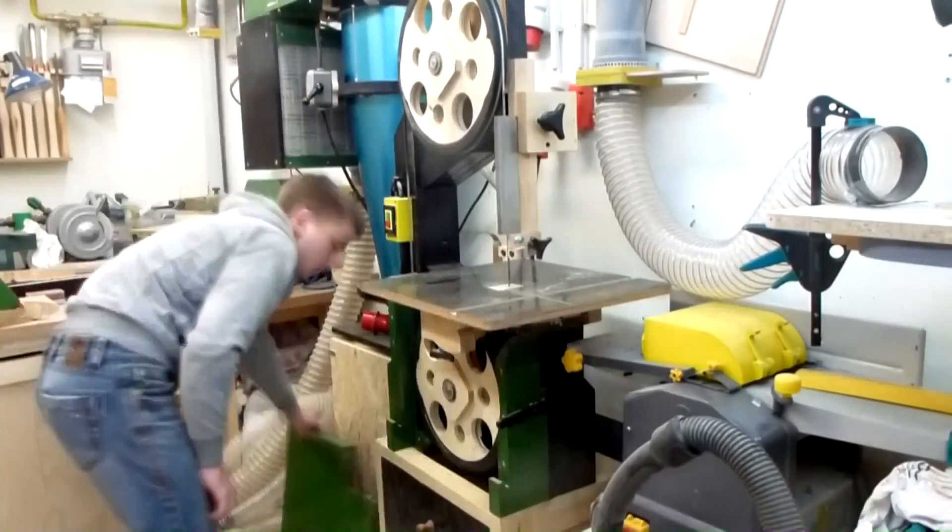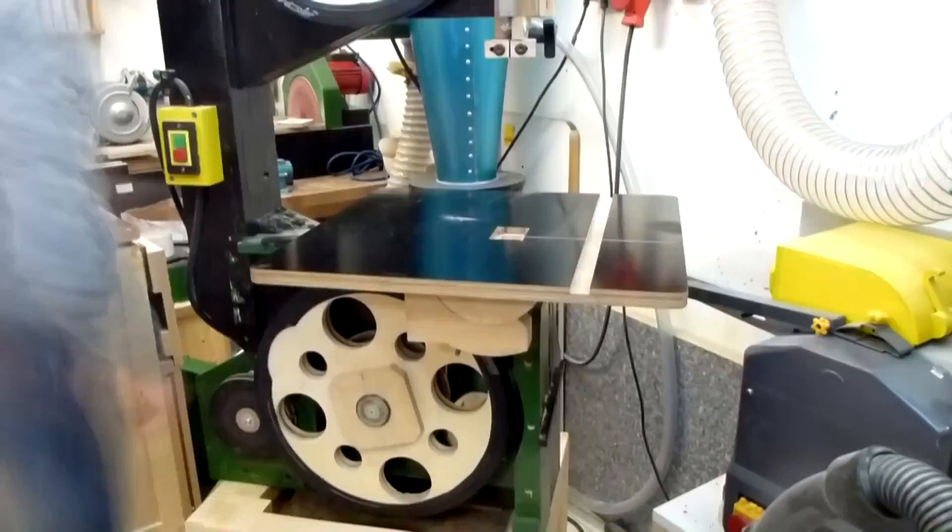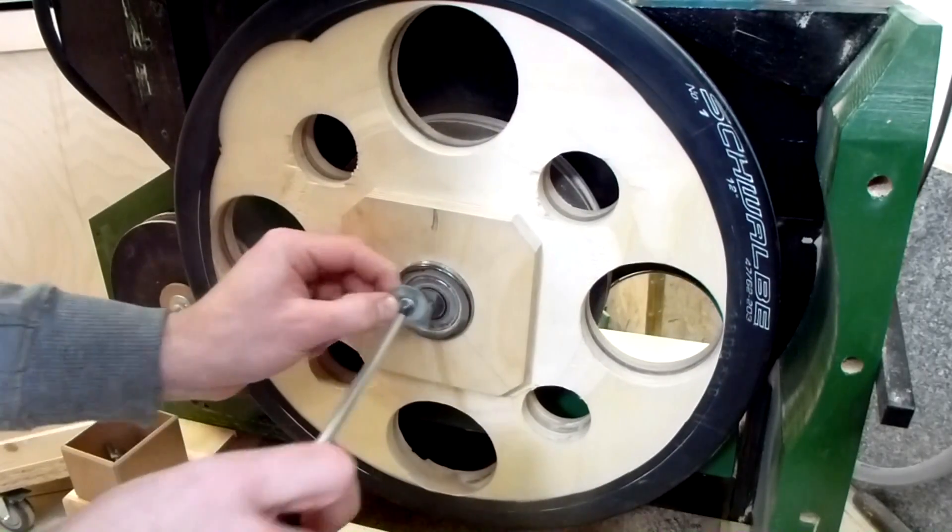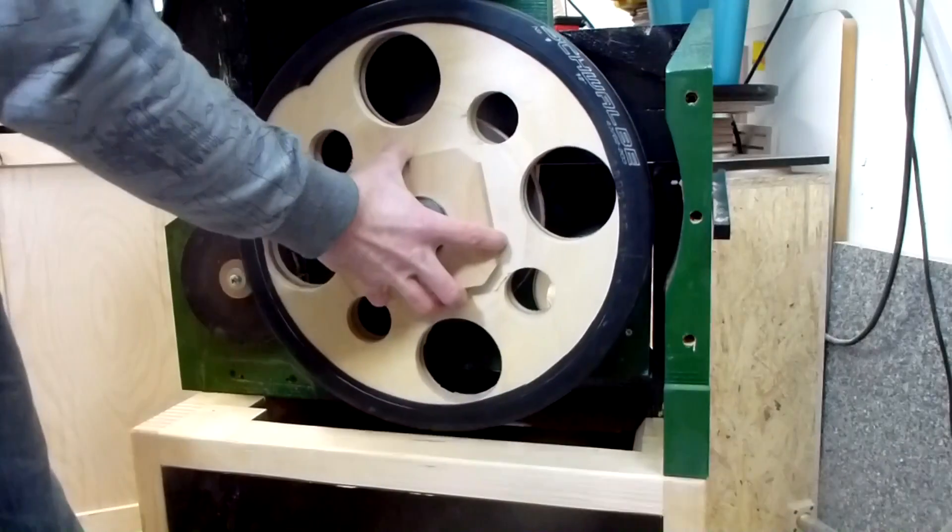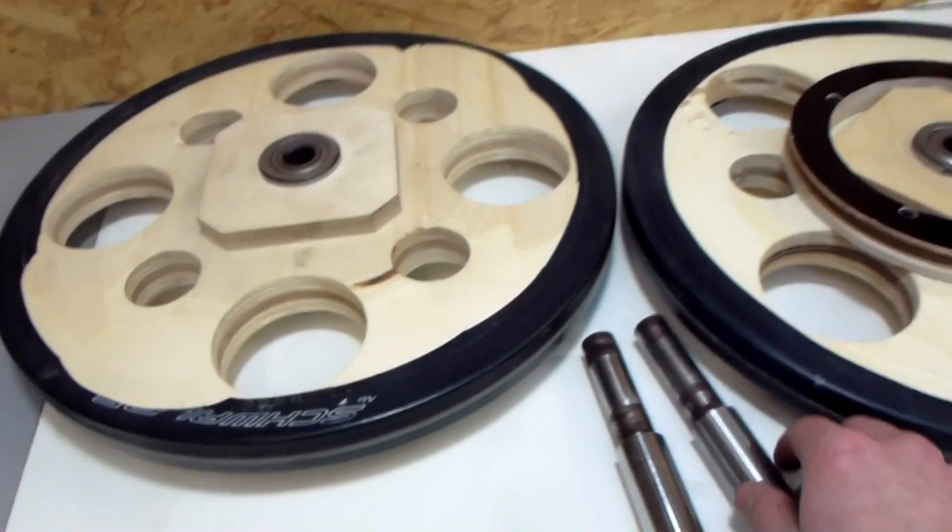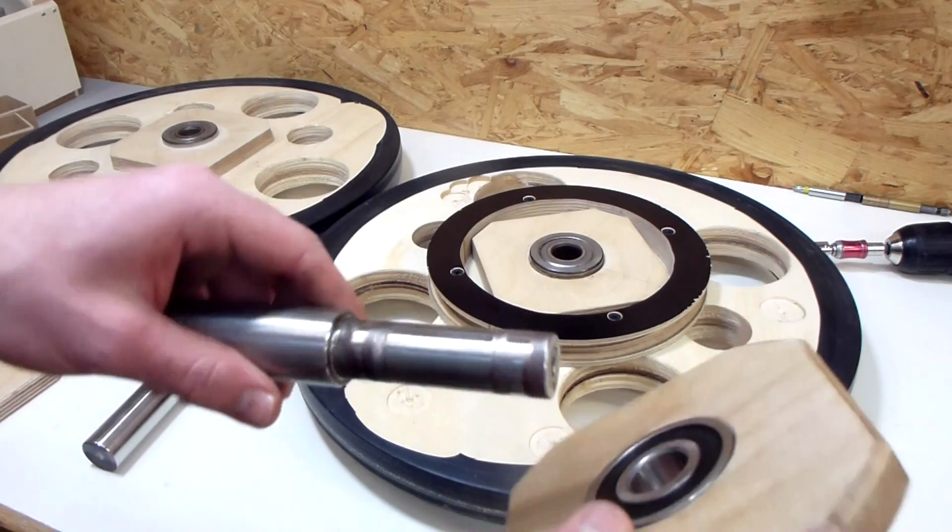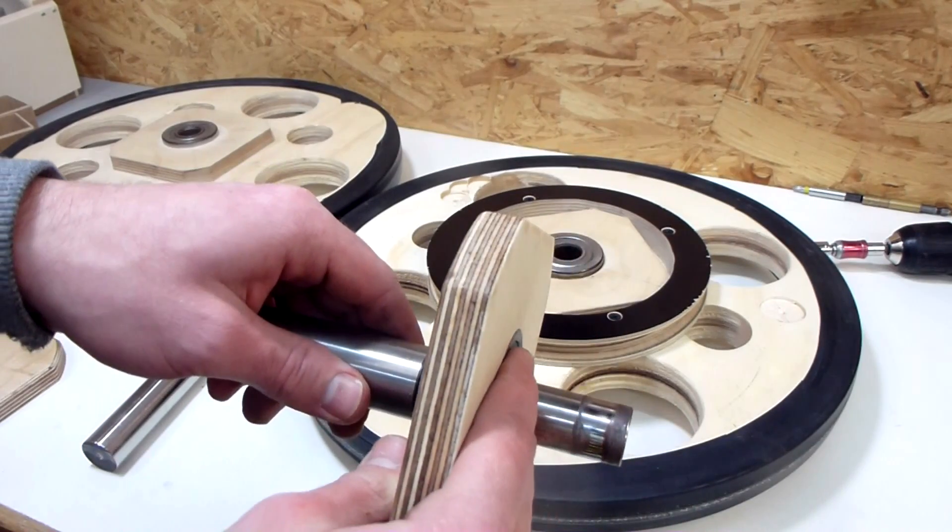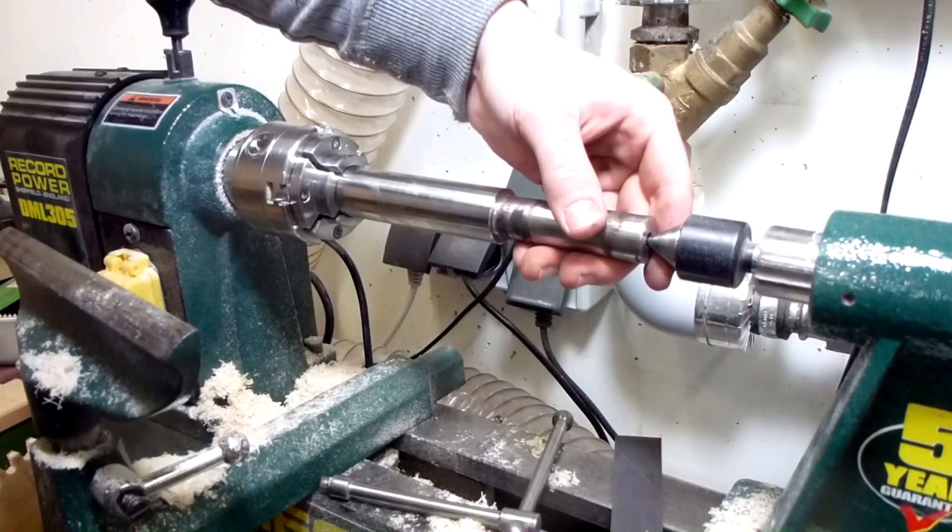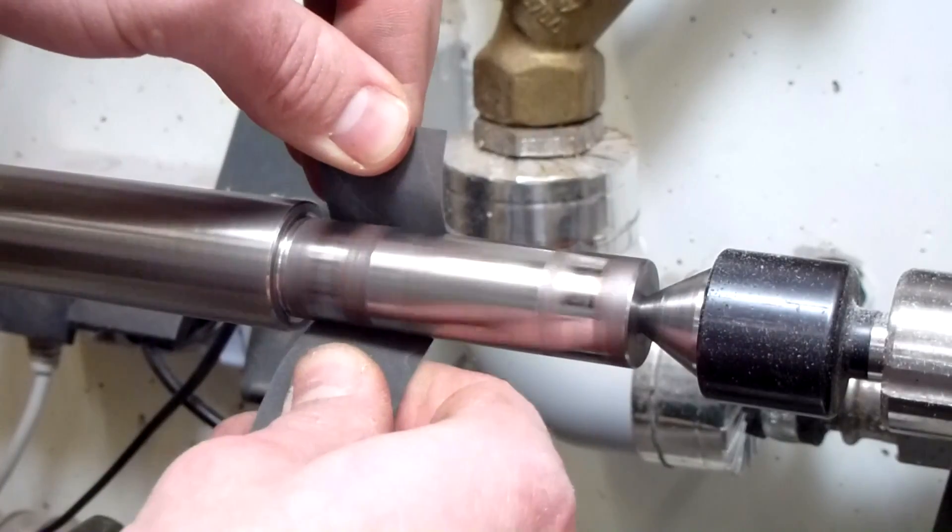While the glue dries, I can start to take apart the saw to get access to the wheel shaft. In case you wonder about the wooden pulley on the motor, it is still in really good shape. Here are the old wheels and the shafts. And as you can see, the bearings were quite rough on these shafts. So let's see if the new bearings still fit on this shaft. Yes. I still wanted to get rid of some burr and rust, so I chucked them in the lathe and ground it away. And some sanding with 600 grit paper.